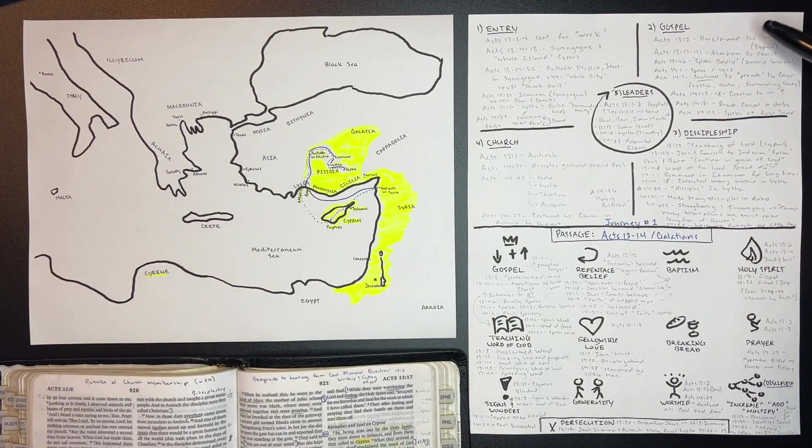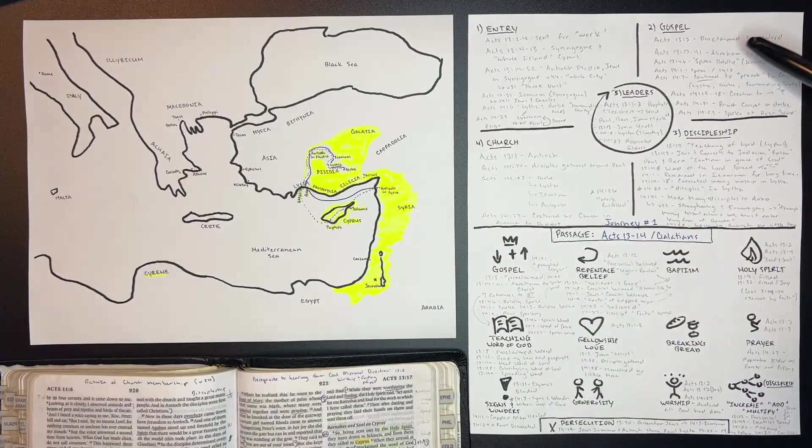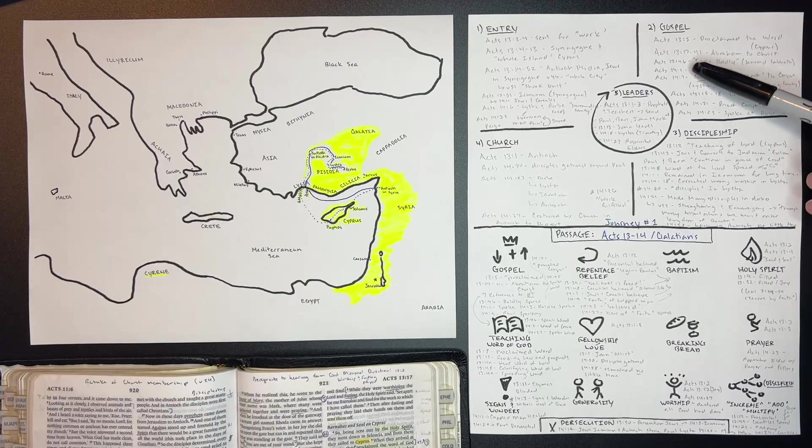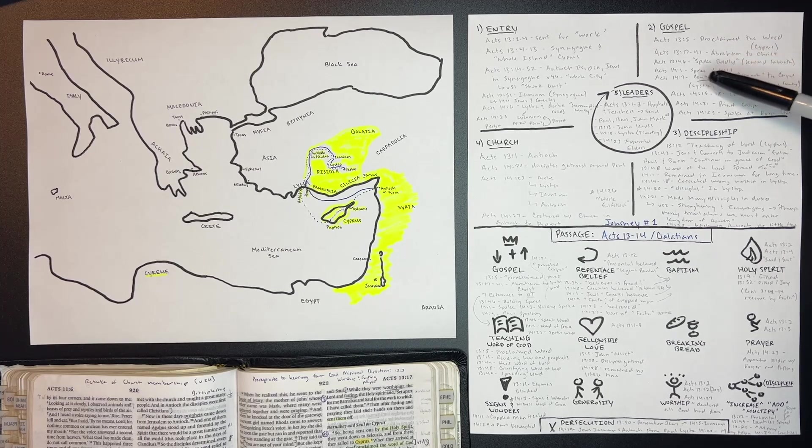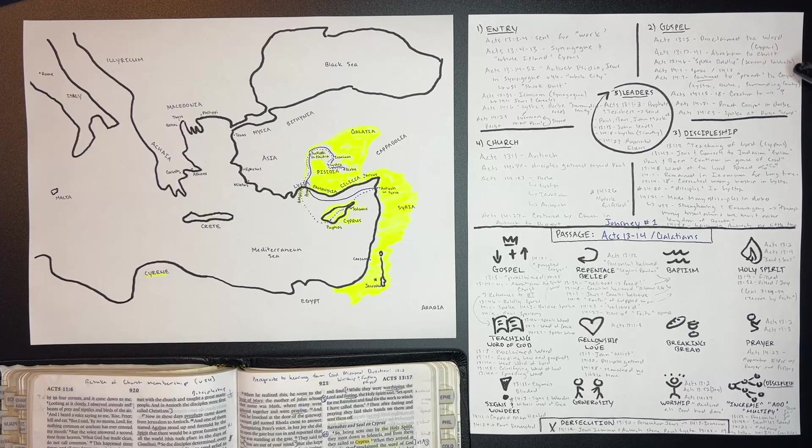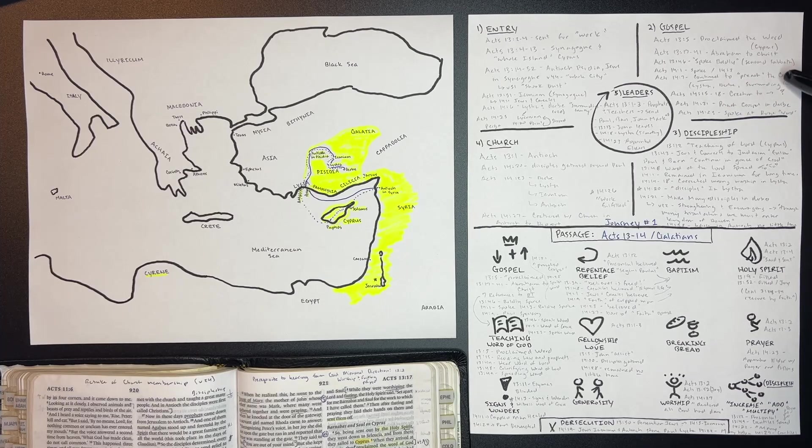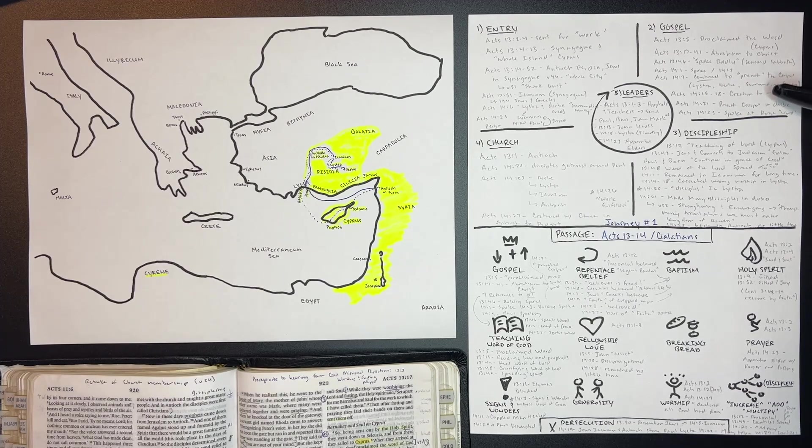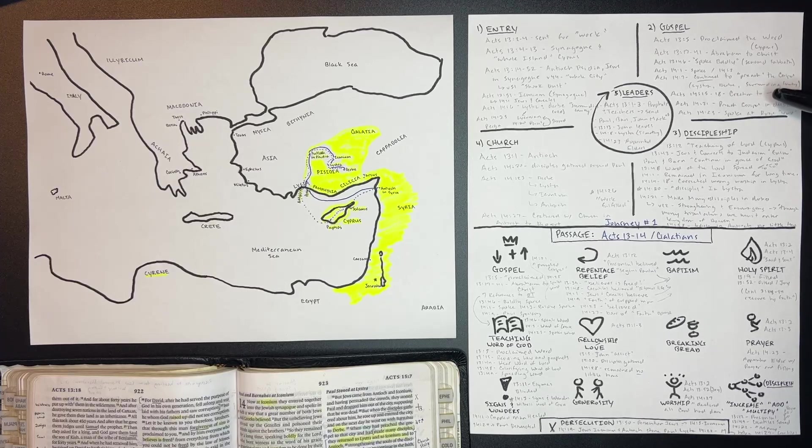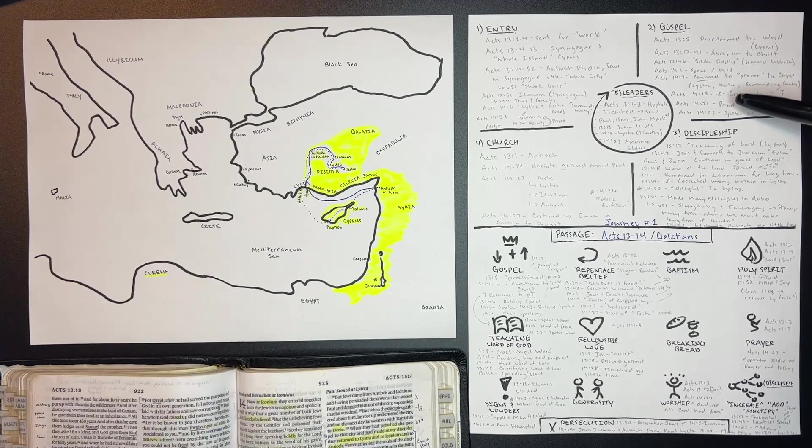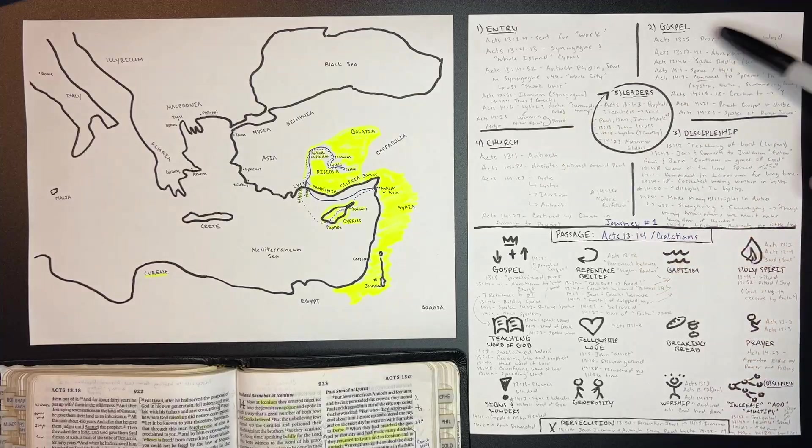How did they share the gospel? We see very clearly that they proclaimed the word in Cyprus throughout the whole island. When they got to Antioch and Pisidia, we see an incredible presentation from Abraham all the way to Christ. In Iconium, they spoke boldly. Acts 14:7 says they continued to preach the gospel throughout Lystra, Derbe, and the surrounding country. In Lystra, a crippled man was healed, and they began to be worshiped as Zeus and Hermes. But they corrected this, going back to creation and saying, No, we are just people. Worship the true God. In Acts 14:21, they preached the gospel in Derbe, and then spoke the word in Perga on their way home.